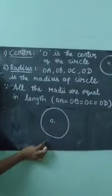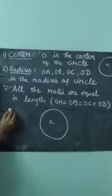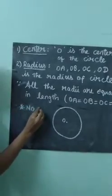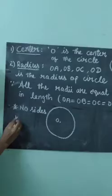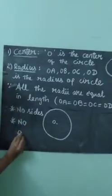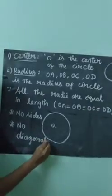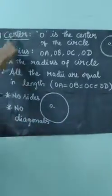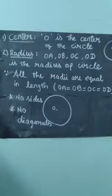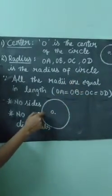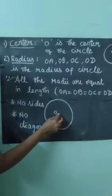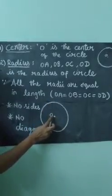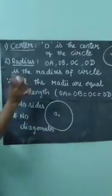Circle is perfectly round because it is a curved surface. Circle has no sides and no diagonals, because circle has no corners. The first point is: circle is perfectly round and has no sides, no diagonals. How do we identify the center? In the before exercise, we put one center point — that center point is called the center of the circle. So O is the center of the circle.